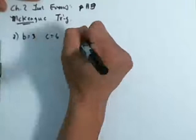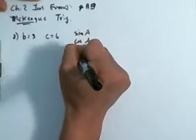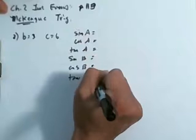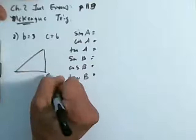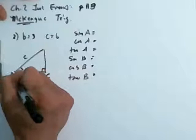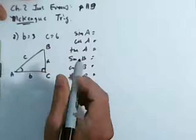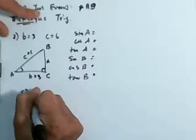For number 2, it says B is equal to 3, C is equal to 6, and they want you to find the sine of angle A, cosine of angle A, tangent of angle A, sine of angle B, cosine of angle B, and the tangent of angle B. It's a right triangle obviously, and you always label the big letter C with the right angle and little c is right there. If you want to label this A, that's little a right here. If you want to label this big B, little b is always opposite. So they give you little b is 3 and C is equal to 6.